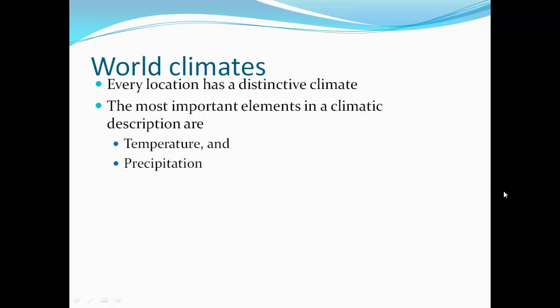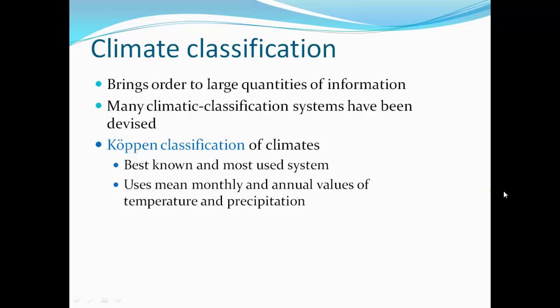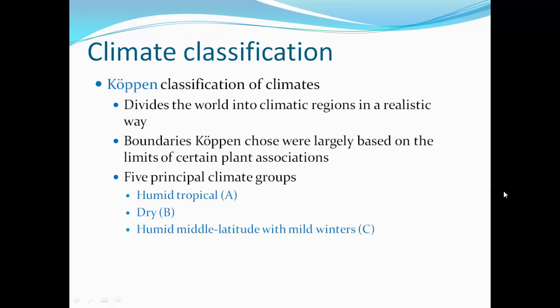World Climates. Every location has a distinctive climate. The most important elements in climate description are temperature and precipitation. Climate classification brings order to large quantities of information. Many climate classification systems have been devised. The Köppen Classification of Climates, the best known and most used system, uses mean monthly and annual values of temperature and precipitation — the average monthly temperature and precipitation and the annual highs and lows.